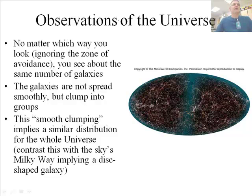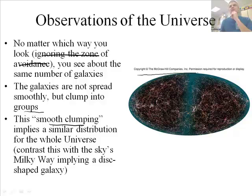Other things they noticed. No matter which way you look, ignoring the zone of avoidance, you see about the same number of galaxies. The galaxies are not spread smoothly, but they clump into groups. They're clumpy. But this smooth clumping, if you will, there's clump but in groups, implies a similar distribution for the whole universe. And then we can contrast this with the sky's Milky Way. So they're beginning to look at all these things.